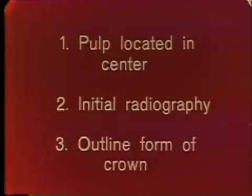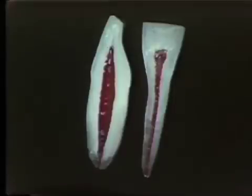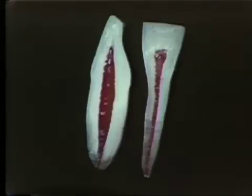Here are some teeth sectioned in cross-section. As you can see, in each case the pulp is about the same shape as the outline of the tooth, only it's in the exact center. The pulp almost forms a bullseye right in the middle of the tooth. Here are some mandibular central incisors sectioned mesiodistally and labiolingually — you can see the pulp is located in the center throughout the entire length of the tooth.